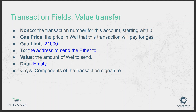If you're just sending ETH to someone — a simple ETH transfer — the gas required is just 21,000 gas. The 'to' field is the recipient address, the data field will be empty since you're not calling any smart contract, and the value field contains the amount of ETH being sent.